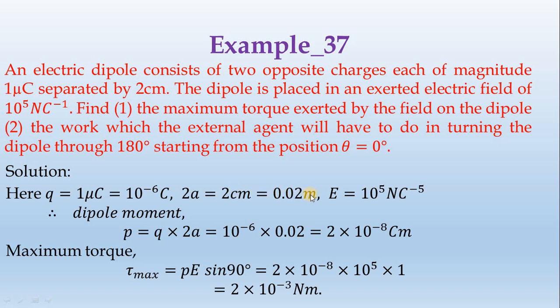Centimeter to meter is 0.02 meters. Electric field E equals 10 to the power 5 newton per coulomb to the power minus 5.